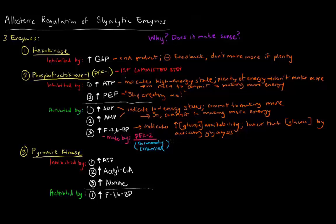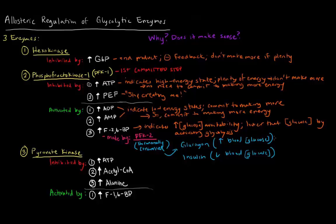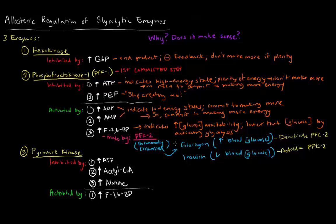Glucagon is the hormone that increases blood glucose levels, whereas insulin is the one that decreases blood glucose levels. Since we're trying to decrease blood glucose levels here, glucagon would deactivate PFK2, whereas insulin would activate PFK2. So insulin plays a role in activating glycolysis through this mechanism. The key takeaway is that high levels of fructose 2,6-bisphosphate indicate high glucose availability, so we activate glycolysis by activating the committed step.